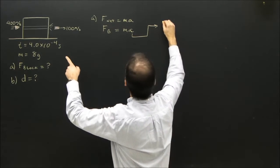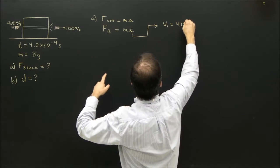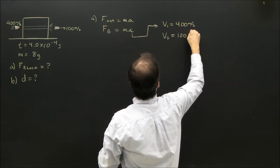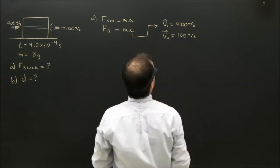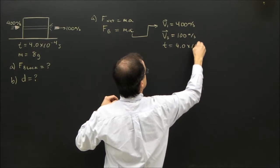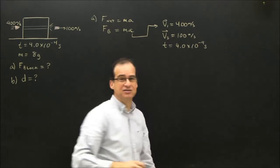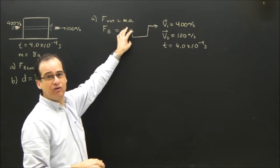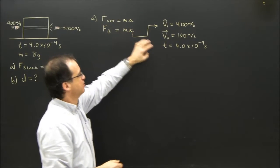I have the initial velocity of the bullet, 400 meters per second. The final velocity of the bullet, 100 meters per second. And I have the time, 4.0 times 10 to the negative 4 seconds. So this is a good example of when kinematics comes into play with your Newton's Second Law formula.